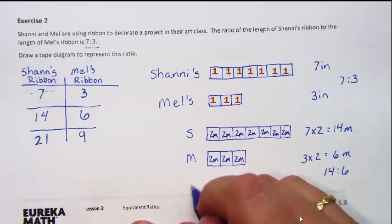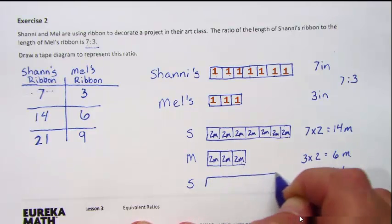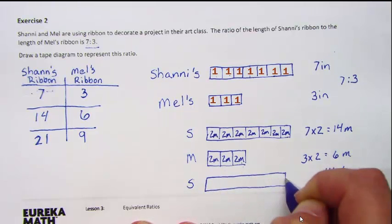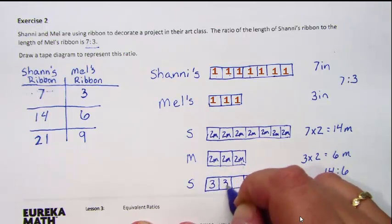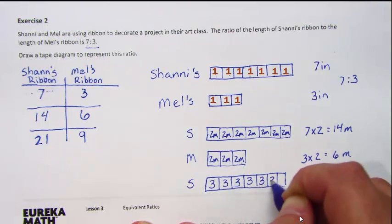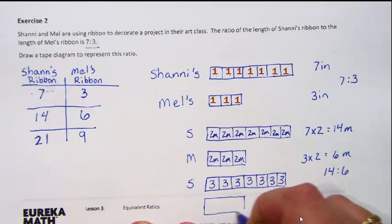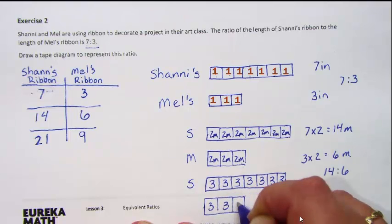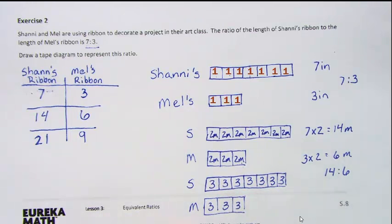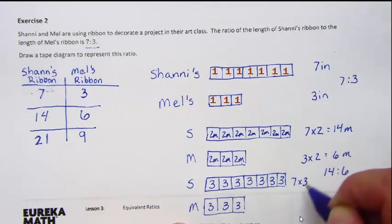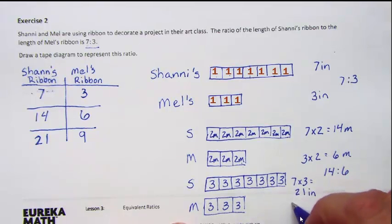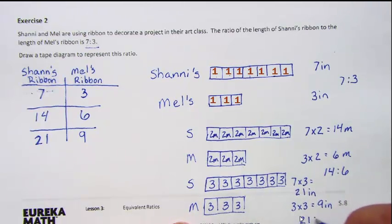We could do this again. Instead of 2 meters, what if each box represents 3 inches? 7 times 3 is 21 inches, and 3 times 3 is 9 inches. Our ratio then would be 21 to 9.